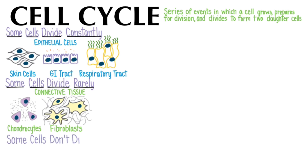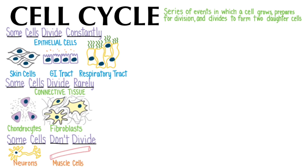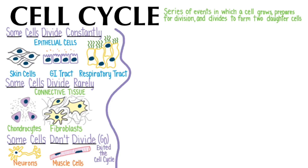Some cells don't divide at all once they have initially formed. Examples of this are neurons and muscle cells. These tissues are highly organized, such that to divide a neuron would destroy its ability to communicate with other cells, and to divide a muscle fiber would inhibit its coordinated contraction with neighboring muscle cells. Cells that don't divide are said to be in a stage called G0, meaning they have exited the cell cycle. So the cell cycle steps we'll now look at do not include these non-dividing cell types.